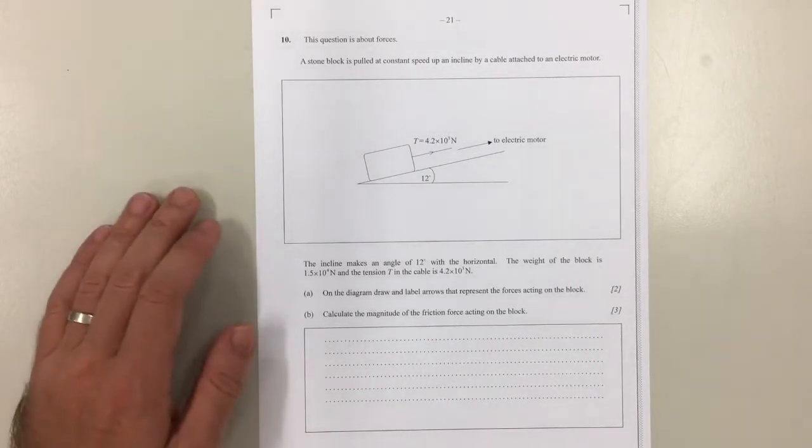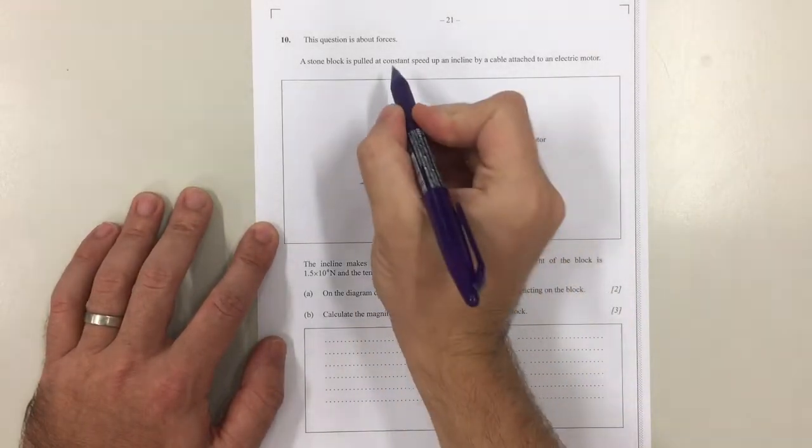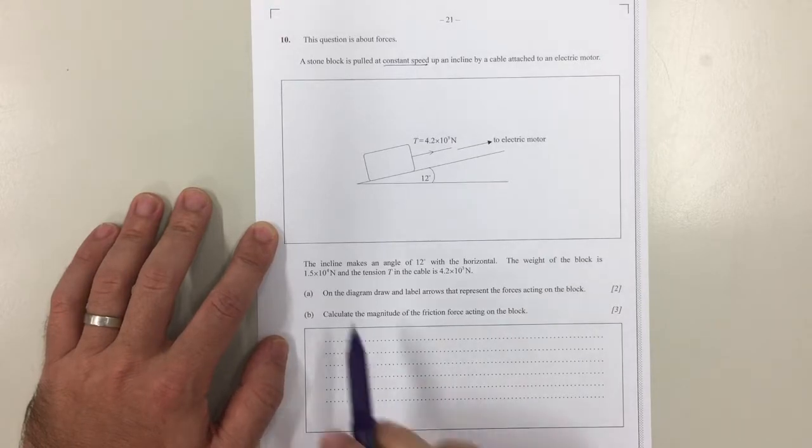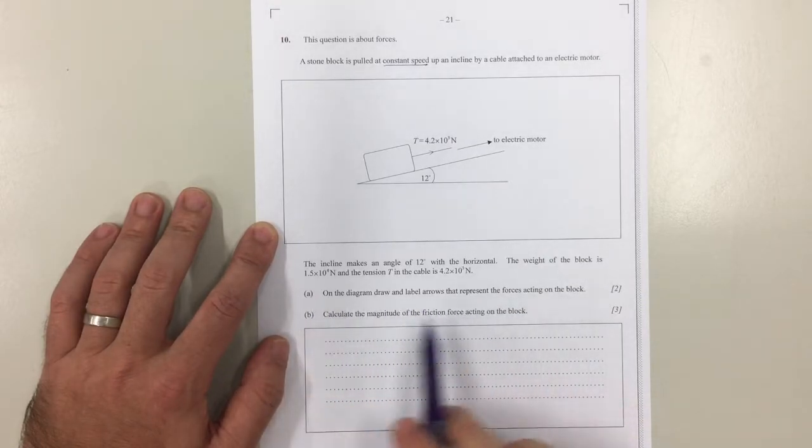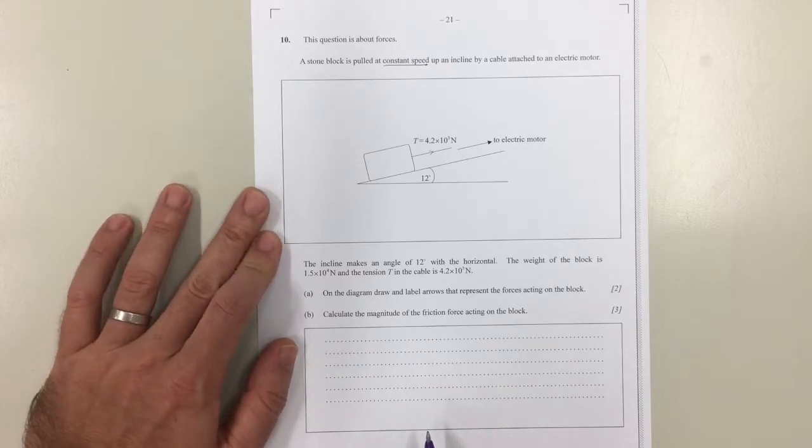Okay, question 10 here is about forces and you've got a block being pulled up at a constant speed by a cable attached to an electric motor. The first question you have to answer is to draw a force diagram labeling all the forces that are acting on the block.